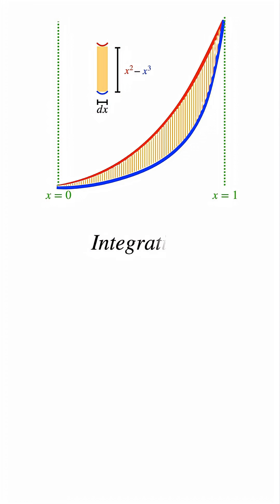The process of adding them up is what we call integration. So we are integrating these tiny rectangles over the interval from zero up to one. And the area of each rectangle is the length, which is x squared minus x cubed times the width, which is dx.